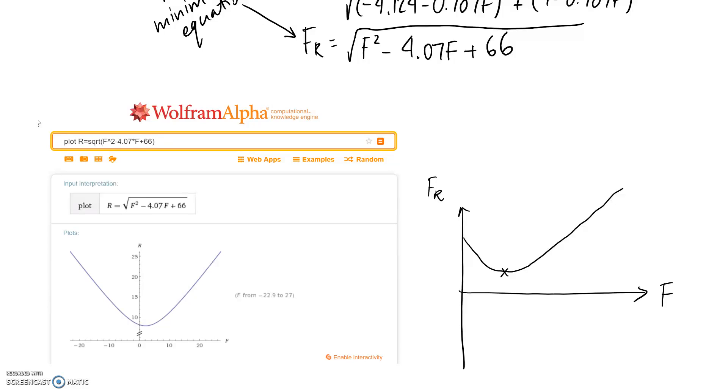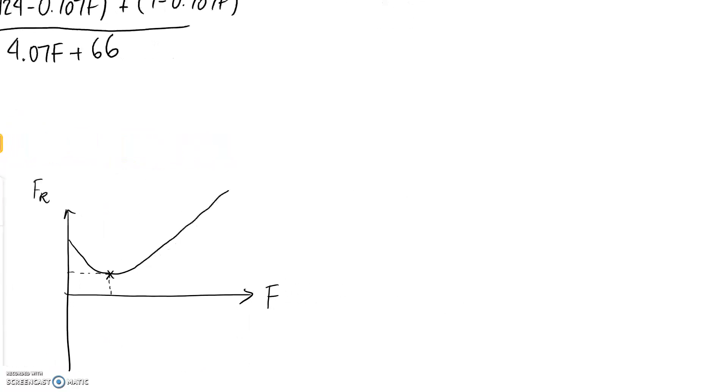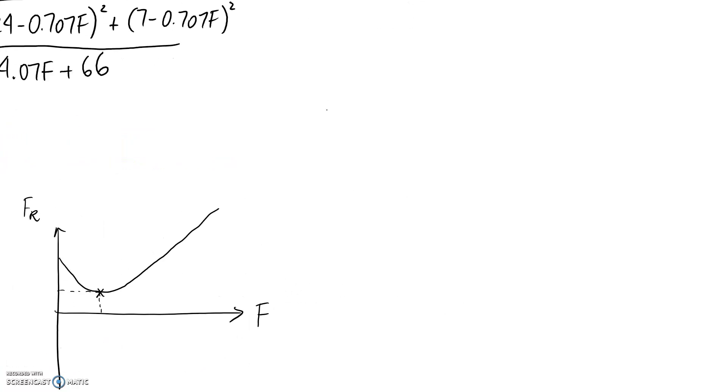So, what we need to do is find out where this minimum point actually lies, in terms of the f and the fR values. One way that we can do this is using derivatives, and that's the way I'm going to choose to do it. Alternatively, as I said, you can also do it on your calculator. So, this is just the manual way. I'm going to come over here and perform this.